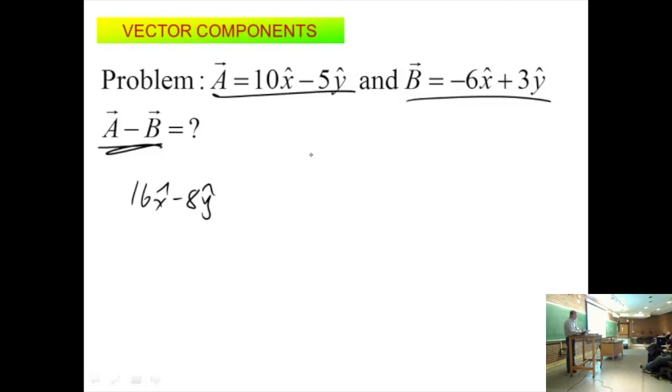So let's write it all out in all its pathetic glory. A is 10x minus 5y minus B, right? What is B? B is negative 6x plus 3y. What is negative B? Negative B is 6x hat minus 3y hat, right?